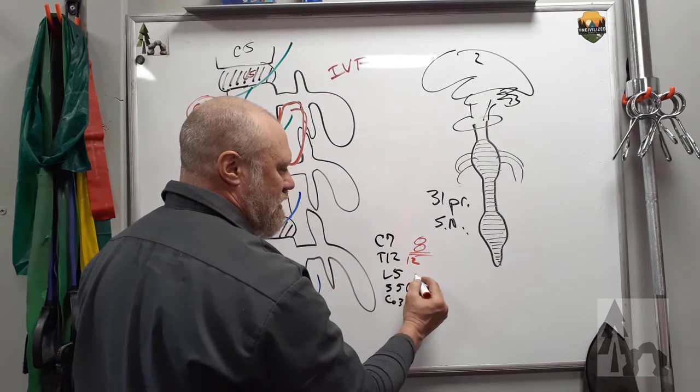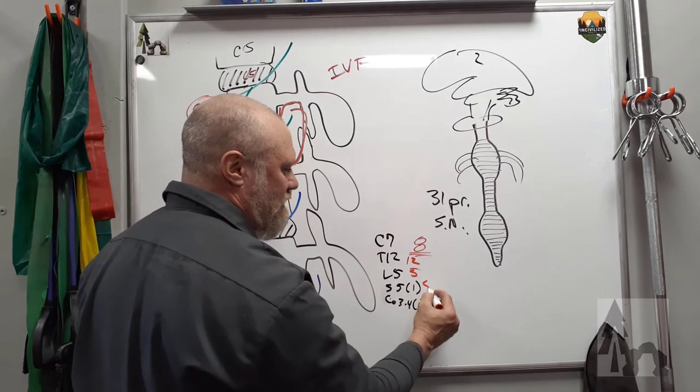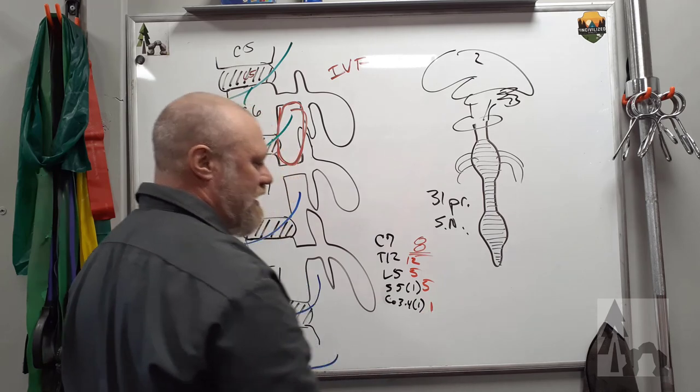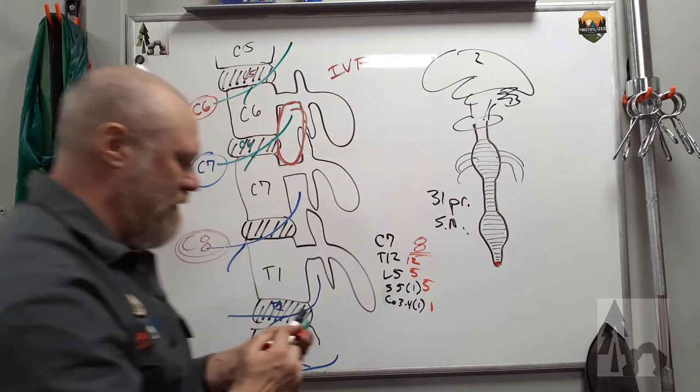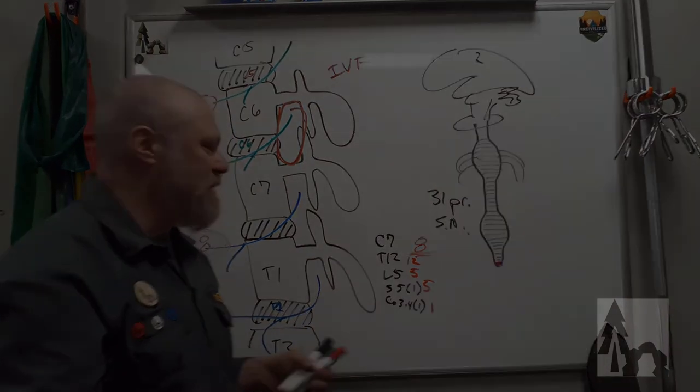Thoracics have 12, the lumbar have 12 segments, there are five sacral segments, and one little coccygeal segment just down here at the tip of the spine, all right? So those are the spinal cord segments.